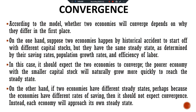On the other hand, if two economies have different steady states — perhaps because they have different rates of saving — then we should not expect convergence. Instead, each economy will approach its own steady state. A good example of this: after World War II, Japan and Germany experienced consistent convergence toward other developed countries like the UK and the US. In a sample of economies with similar culture and policy, studies find that economies converge to one another at a rate of about 2% per year — that is, the gap between rich and poor economies closes by about 2% per year.